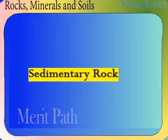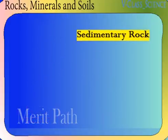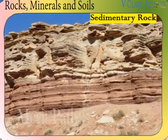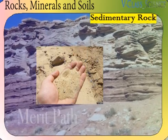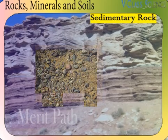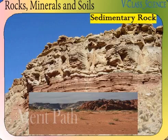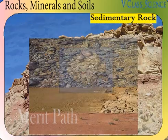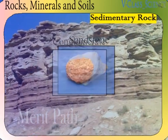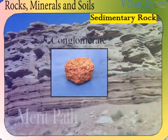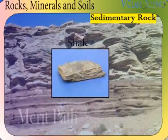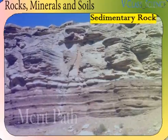Sedimentary rocks. These rocks are made when sand, mud and pebbles get laid down in layers. Sandstone, conglomerate and shale are some of the examples of sedimentary rocks.